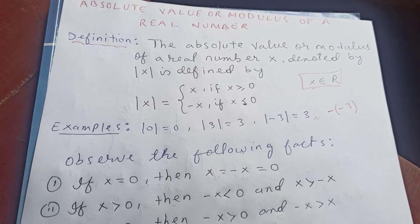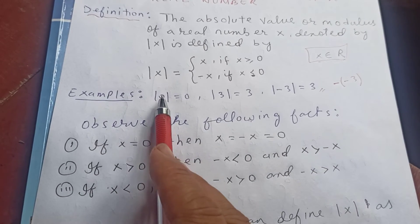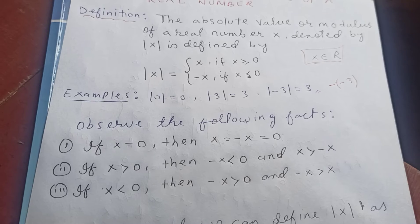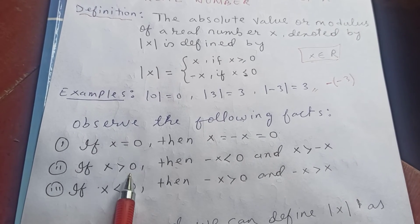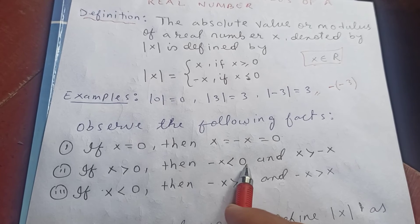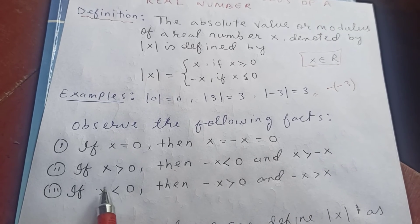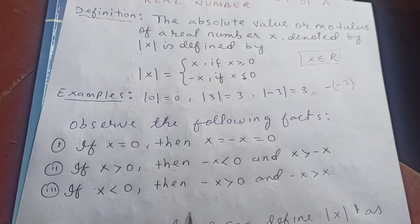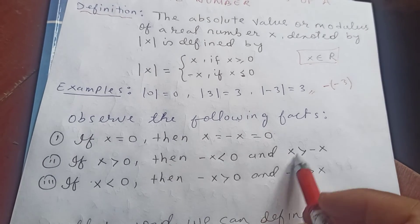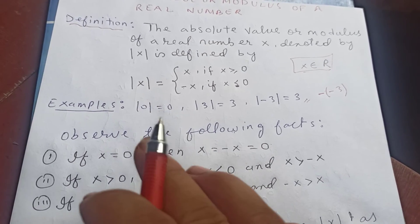Now let's define another definition for modulus or absolute value. Let's observe the following facts. If X equals 0, then X and negative X are both 0. If X is greater than 0, then negative X is less than 0, therefore X is greater than negative X. If X is less than 0, then negative X is greater than 0, so negative X is greater than X.